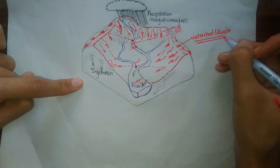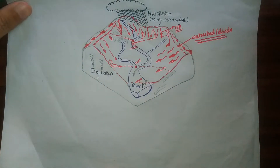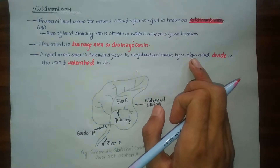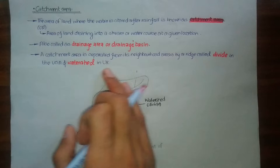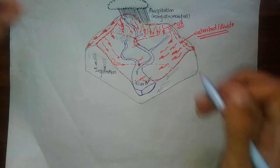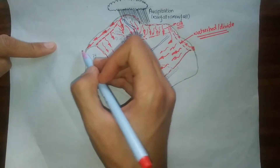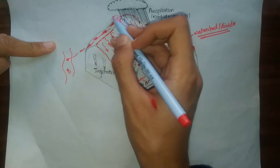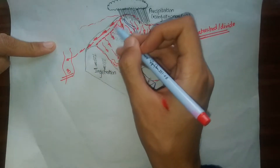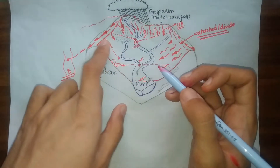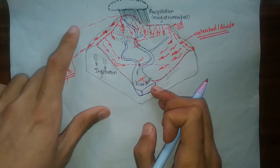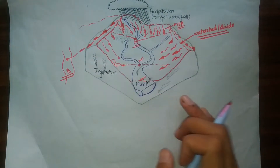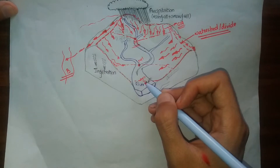This boundary is called a watershed or divide. A catchment area is separated from its neighboring areas by a ridge — an elevated ground — called 'divide' in the USA and 'watershed' in the UK. Divide and watershed are the same terms. Rain water flowing in the other direction may be deposited in some other river, River B, making that region the catchment area for River B. The boundary separating the catchment area of River A and River B is our watershed or divide.